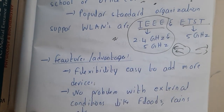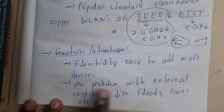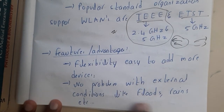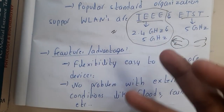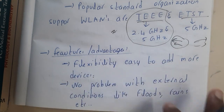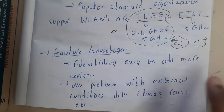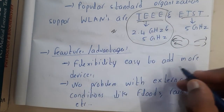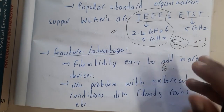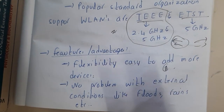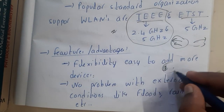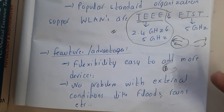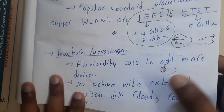There is no problem with external conditions like floods or rain. If there is heavy rain or flooding in your area, there is a very rare chance that a wired internet connection will work. But with Wi-Fi or other wireless connections, it will work easily with no issues.